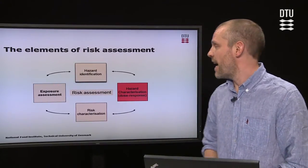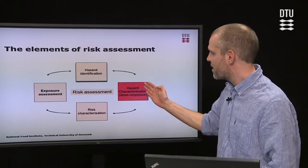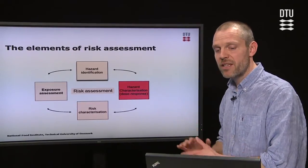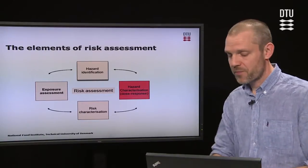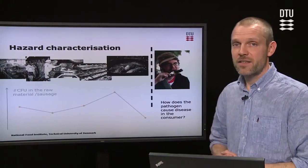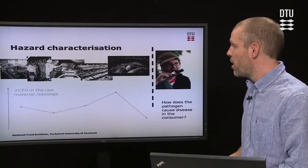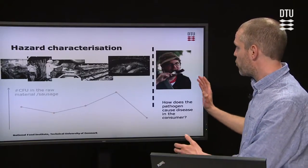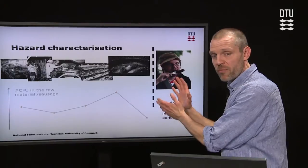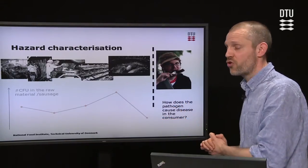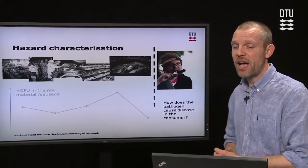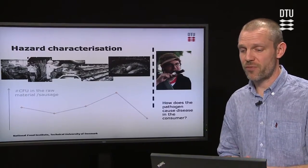Looking at this slide again, we are now moving to the hazard characterization — which I also mentioned in brackets as the dose response. This is the slide we have from the first lecture, and now we are focusing on the consumer. We have estimated and predicted exposure for the consumer, and the focus will now be on how the pathogen causes disease in the consumer.